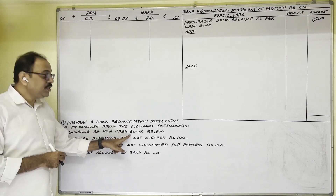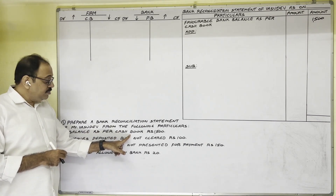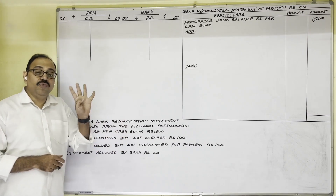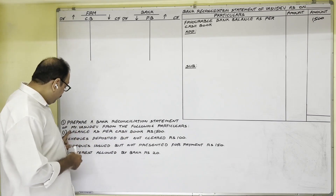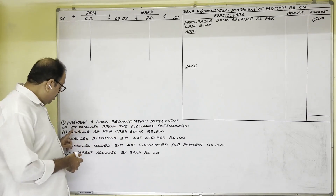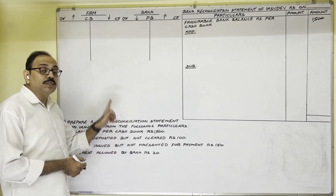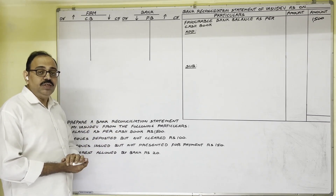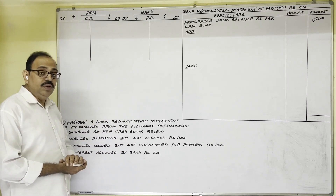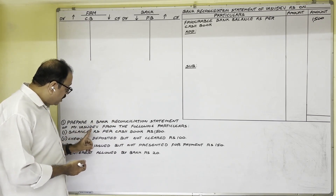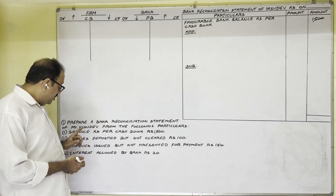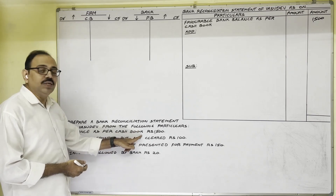There are four possibilities: favorable bank balance as per cash book, favorable bank balance as per passbook, overdraft bank balance as per cash book, or overdraft bank balance as per passbook. In this question, favorable bank balance as per cash book is given.